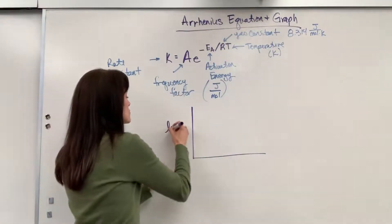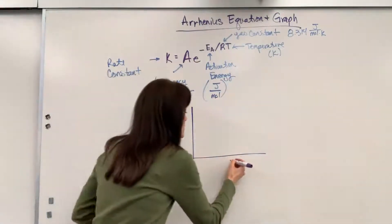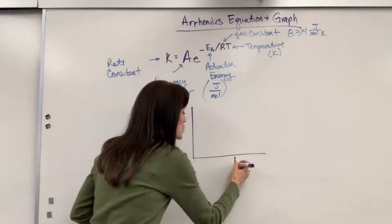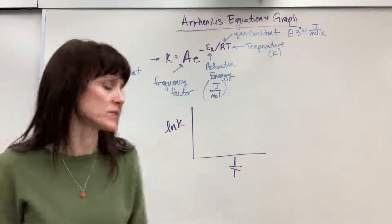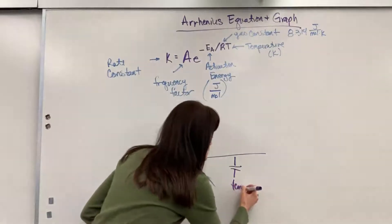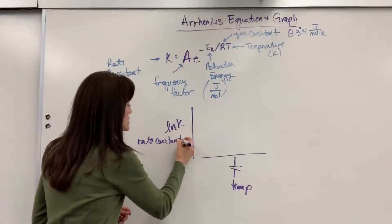So, be really careful on the axes. On our y-axis is natural log of K, the rate constant, and so your x-axis is 1 over T, capital T as in temperature, not time. So, let's put a reminder. This is going to be temperature, and that is going to be the rate constant, natural log of that rate constant.